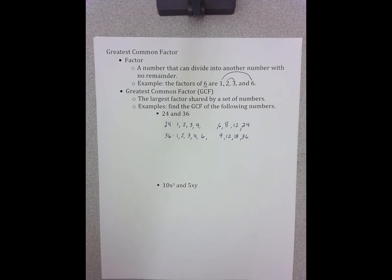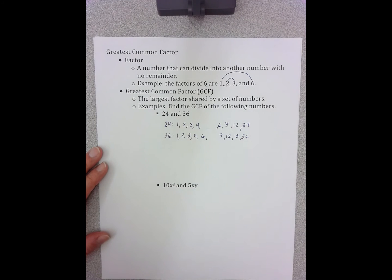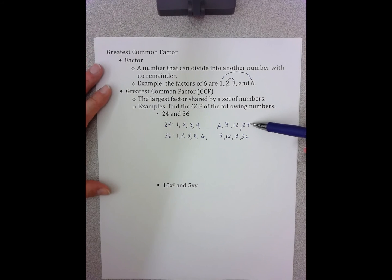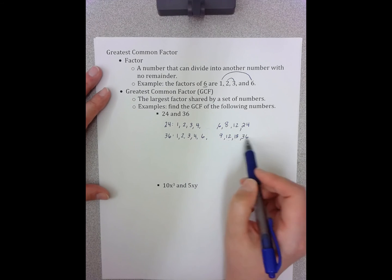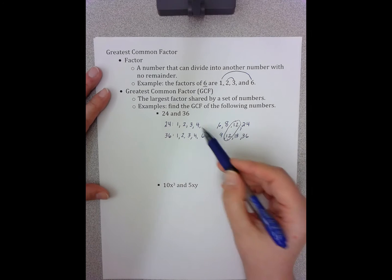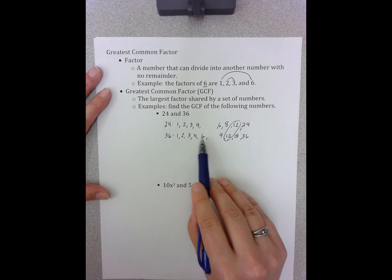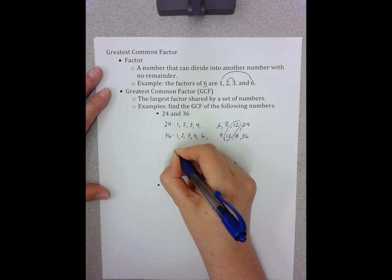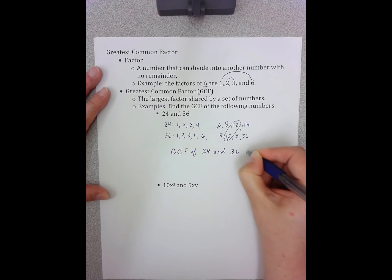I've checked them all, essentially. Because if there were numbers after 6 that worked, they would have a partner on the other side before the 6. So now I'm looking for the greatest factor in common. Going down my list — 24 has 12, and does 36 also have a 12? Yes, it does. They both have 12. They also both have a 6, a 4, a 3, a 2, and a 1. But of 1, 2, 3, 4, 6, and 12 — 12 is the greatest. So the greatest common factor of 24 and 36 is 12.